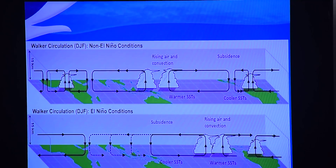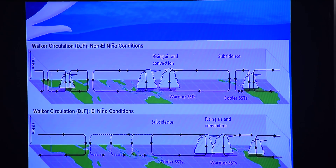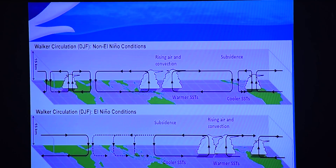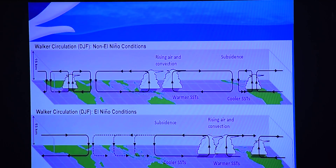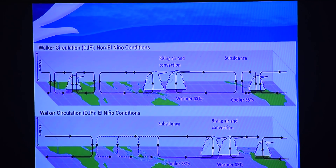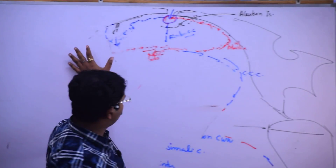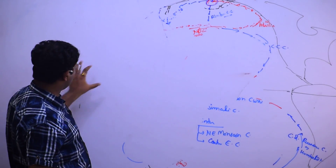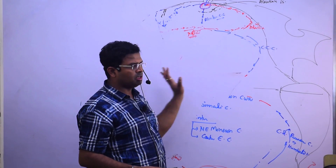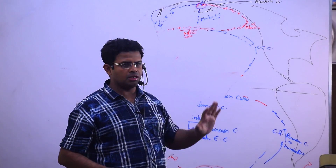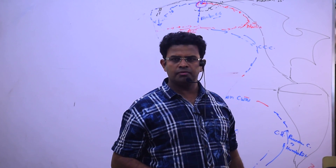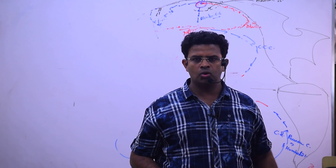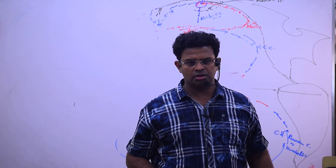We have to make the map of the world — three maps — especially the Africa region. Africa, India, Australia, the Indian Ocean and the Pacific Ocean should be visible. And we will see the MJO — the Madden-Julian Oscillation.